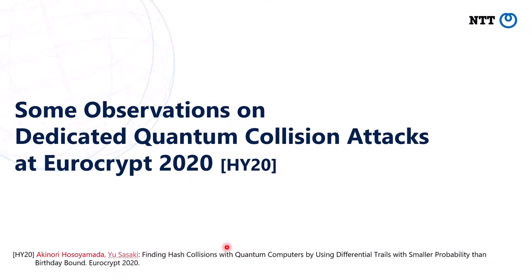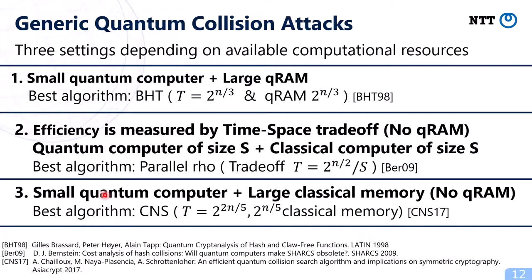Next, I would like to explain about some observations on dedicated quantum collision attacks that we presented at Eurocrypt 2020. As I mentioned, we can consider three settings in the quantum setting depending on available computational resources. In the first setting, we assume that a small quantum computer of polynomial size and a large quantum RAM of exponential size are available. In this setting, the best generic collision attack is the BHT algorithm, which finds a collision in time 2 to the power n over 3 using a quantum RAM of size 2 to the power n over 3.